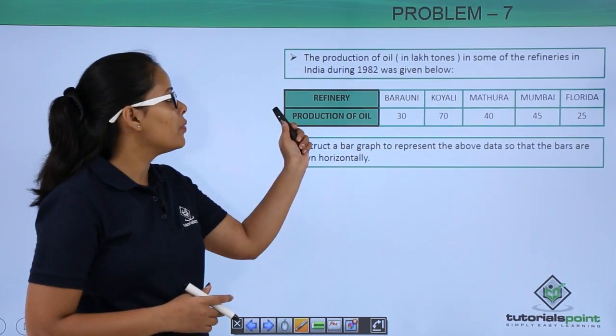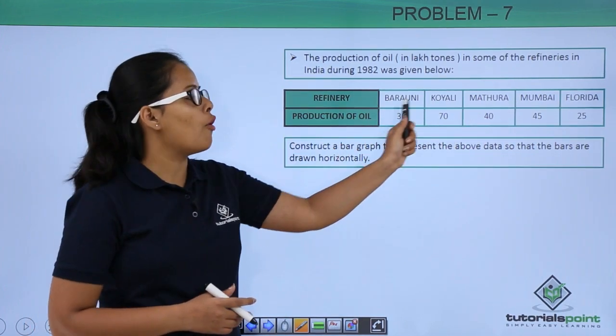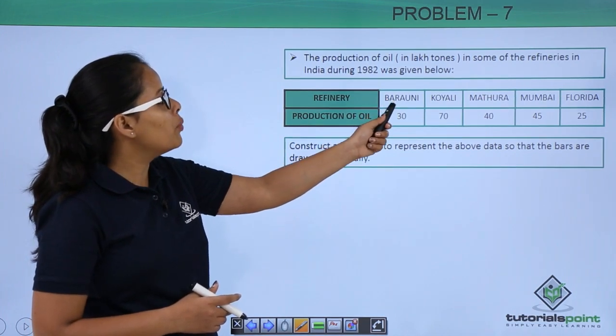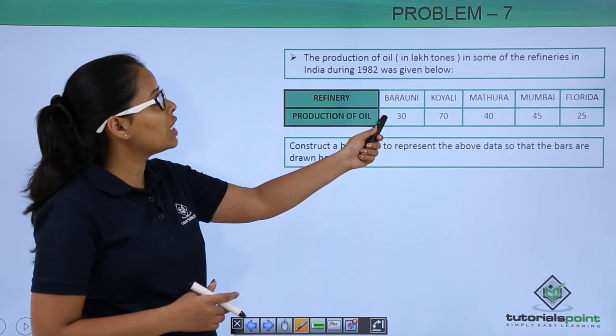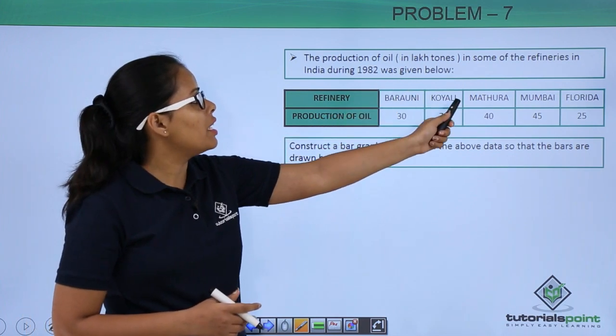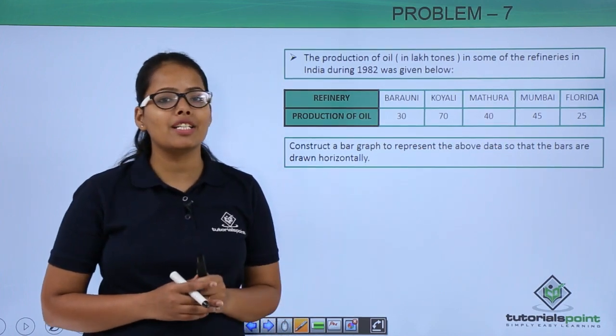So here this is the table. These are the refineries and production of oil. You can see here in refinery Baruni production of oil was 30 which is in lakh tons. In Kohli it is 70, in Mathura it is 40, in Mumbai it is 45, and in Florida it is 25.